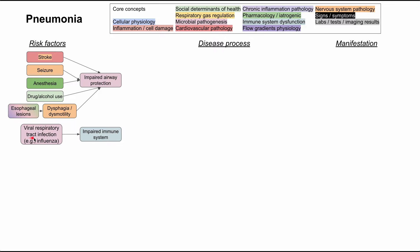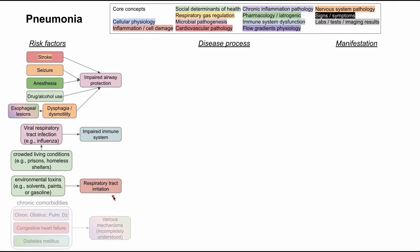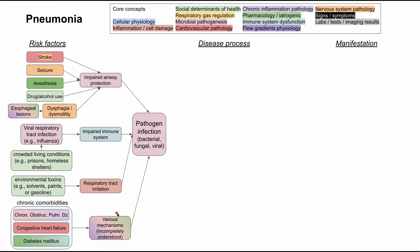When you have a viral respiratory tract infection like the flu, this can impair your immune system and predispose you to pneumonia. A social determinant of health associated with this is crowded living conditions such as prisons or homeless shelters, which can lead to viral respiratory infections like influenza that then predispose you to pneumonia. Another social determinant is environmental toxins like solvents, paints, or gasoline, which can directly cause respiratory tract irritation and predispose you to pneumonia. Chronic comorbidities like COPD, congestive heart failure, and diabetes can also cause pneumonia through various mechanisms. All of these risk factors eventually lead to a pathogen infection — bacterial, fungal, or viral.